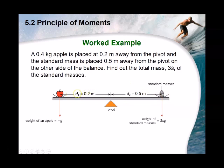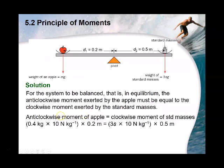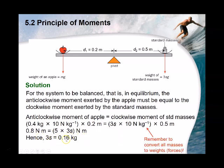Even if the apple and standard masses are placed at different distances from the pivot, you can still use the device by applying the principle of moments: anti-clockwise moment of the apple equals clockwise moment of the standard mass. This gives a rough idea of how the beam balance uses the principle of moments to find mass.